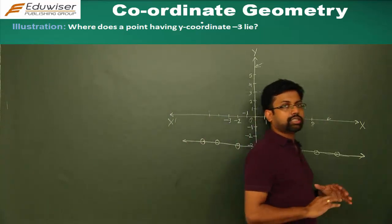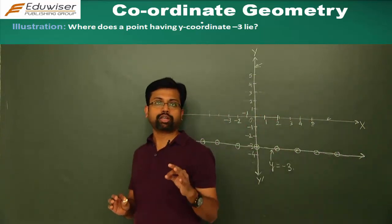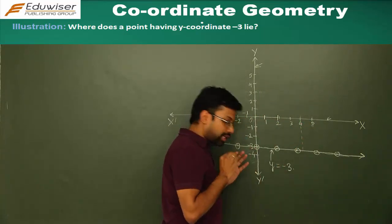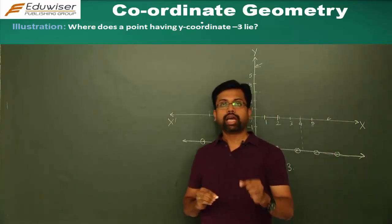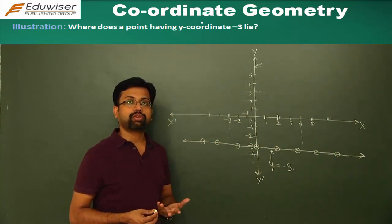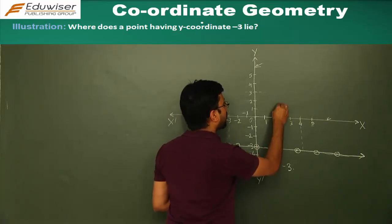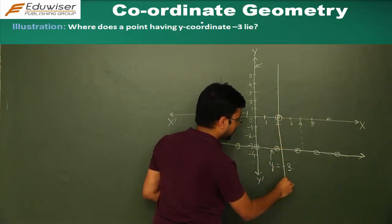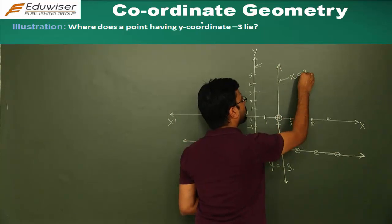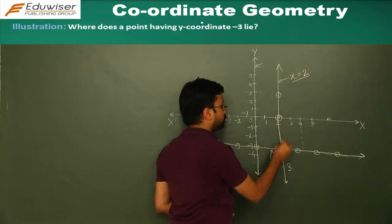The question does not specify what the value of the x-coordinate is going to be — hence it is immaterial whether x is 4 or x is minus 3. All that matters is the value of the y-coordinate, which is minus 3. For example, if you were asked to plot all points having x equals 2, you find x equals 2 and draw a line parallel to the y-axis. This line is also the equation of a straight line: x equals 2.